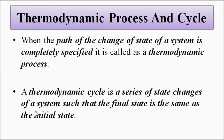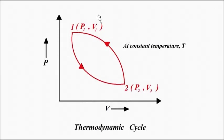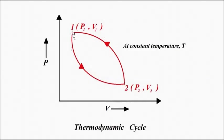A thermodynamic cycle is a series of state changes such that the final state is the same as the initial state. Here, with two states defined by P1, V1 and P2, V2, the system travels from state 1 to state 2 and then back to state 1 — the same point where it started. The path taken is from 1 to 2 and back from 2 to 1.